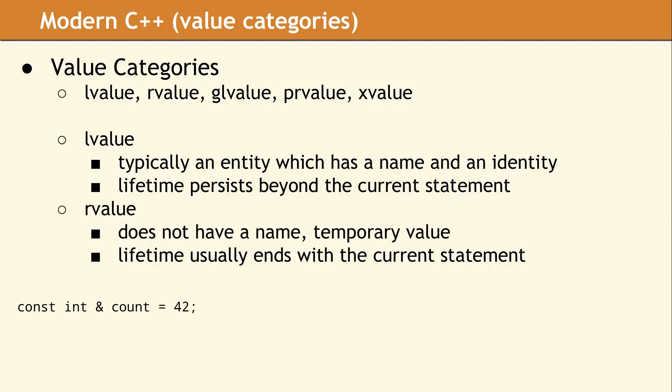Knowing this information does not make you an expert at chess or even define all the rules of the game. But this knowledge is absolutely required before you can study chess strategy or understand how to play well. An L-value is a value which has its own identity and usually has a name. Since it has an identity, you can take its address. An R-value does not have a meaningful name or an identity, and it usually has a lifetime which ends at the next semicolon.